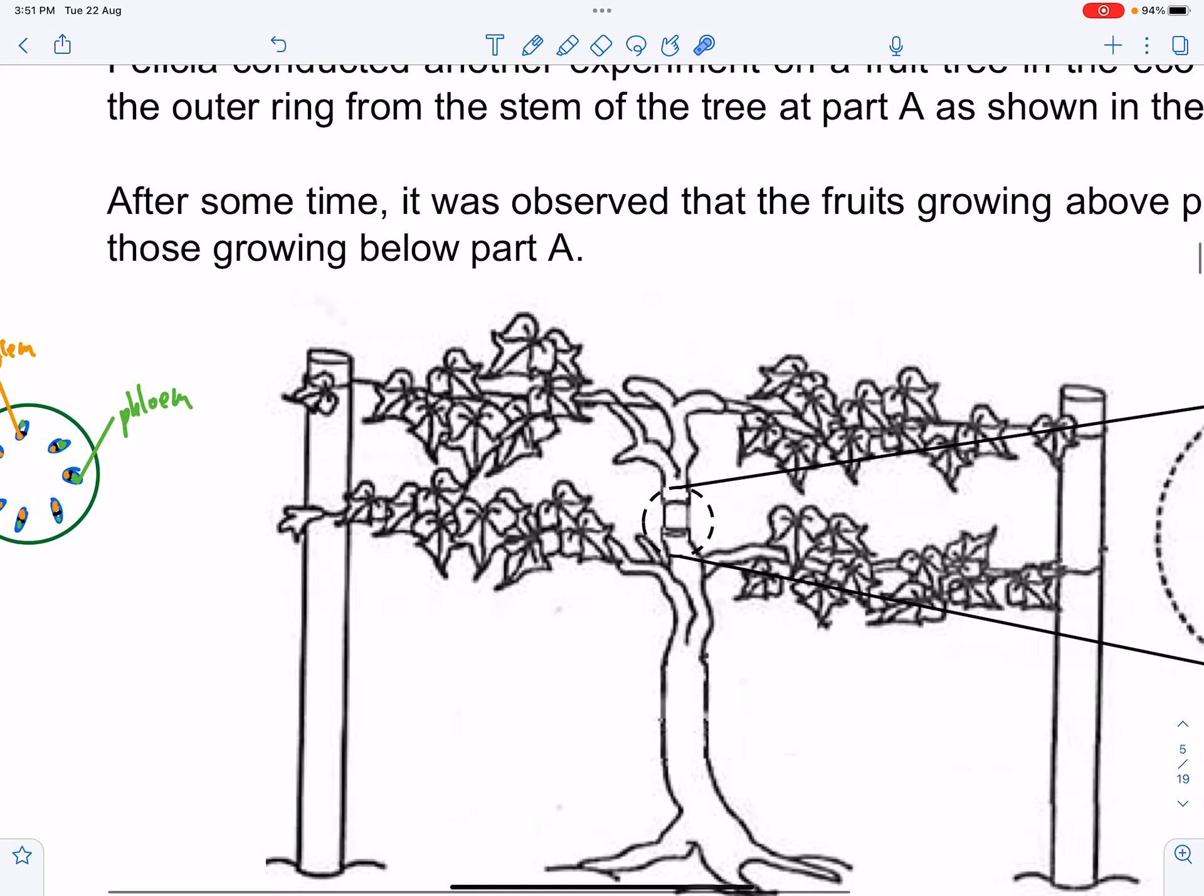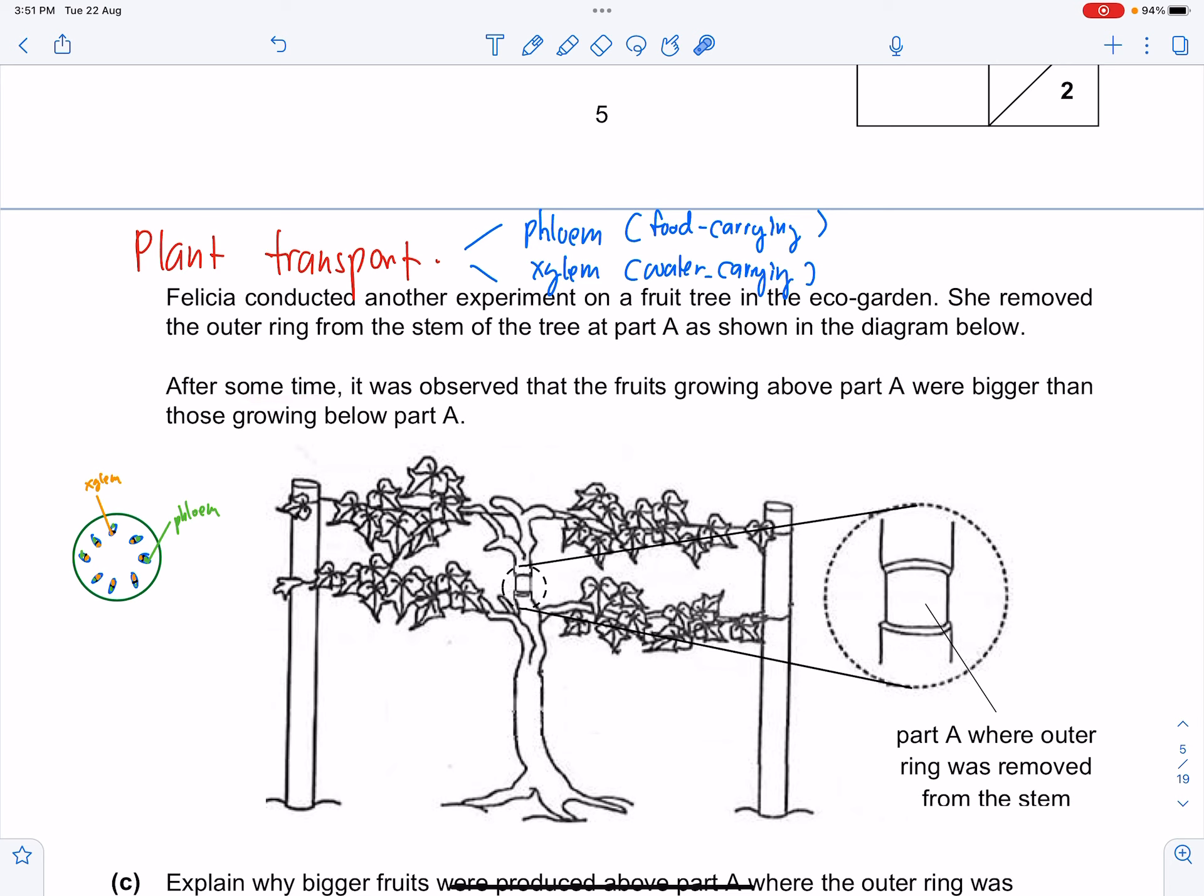So how does that affect the tree? Let's take a look. After some time it was observed that the fruit growing above part A were bigger than those growing below.